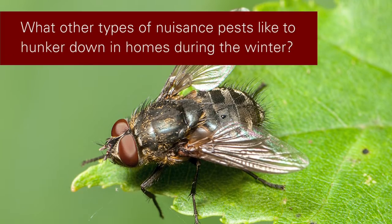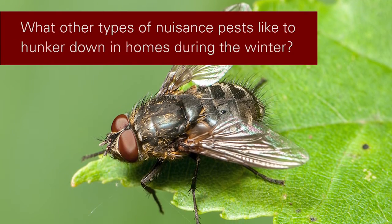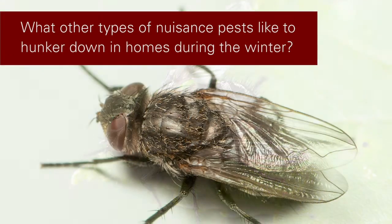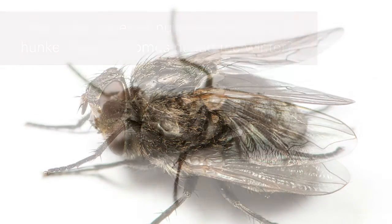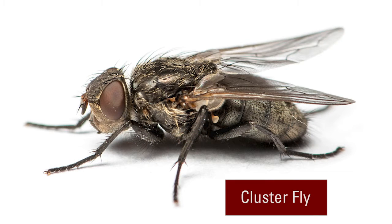Another group that enters homes are some flies. There's a specific group called cluster flies — named because they often cluster in attics. These are a type of blowfly that actually parasitizes earthworms during the warm parts of the year. These flies, along with a couple other fly groups, can sometimes be found in numbers in attics and homes.